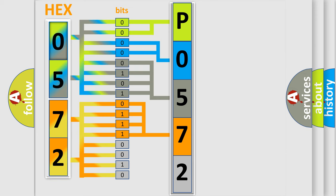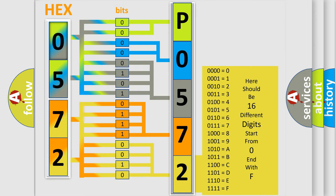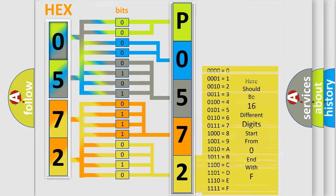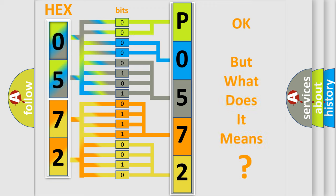A single byte conceals 256 possible combinations. We now know in what way the diagnostic tool translates the received information into a more comprehensible format. The number itself does not make sense to us if we cannot assign information about what it actually expresses.